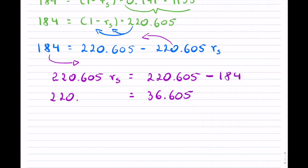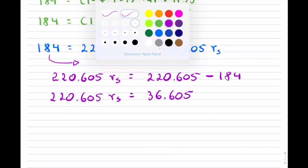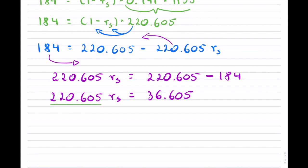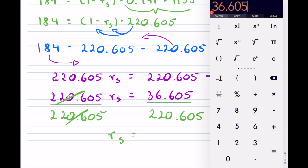And now I have to get rid of that 220 right here. So I'm going to divide both sides by that, like so. So that will cancel this off, and I will get my answer. So let's take that in, divide it by 220.605, and that's 0.16593, and so on. Now we're supposed to provide the percentage, so we have to change this to a percent.